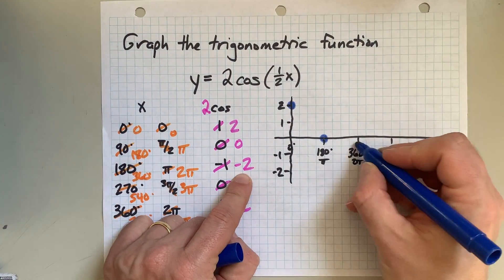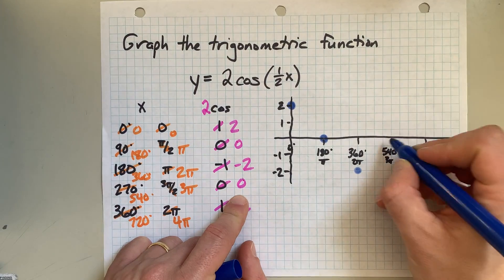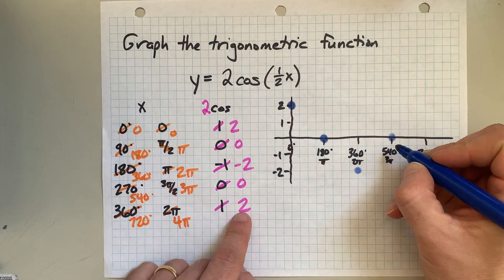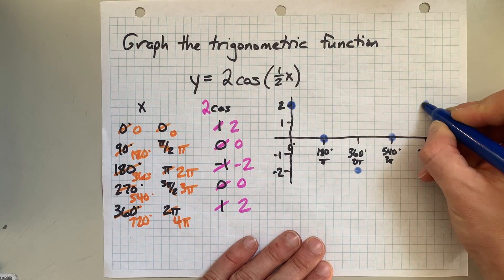360, negative 2. 540, 0. And 720, 2. There we go.